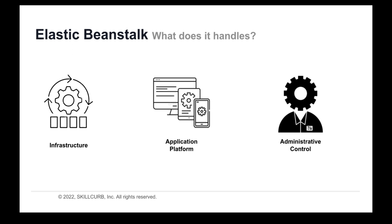Elastic Beanstalk handles the provisioning of your infrastructure, including load balancing, auto-scaling, and application health monitoring. It also takes care of the application platform needed to run your code, including the installation and management of your application stack, as well as patching and updates to your operating system and the application platform. And the great thing is that you are still in control of everything, so you can still have complete administrative control of the AWS resources.